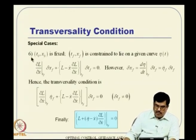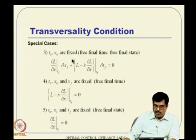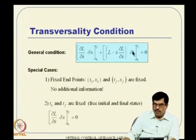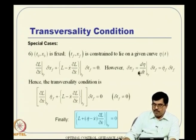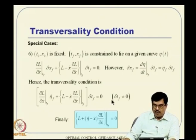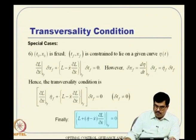A very special case is when t-naught and x-naught are fixed, and tf and xf are constrained to lie on a given curve. In this case, t-naught and x-naught give no extra information, but tf and xf—delta xf and delta tf—cannot be taken as zero. However, they satisfy a constraint equation derived from the fact that xf is a function of eta and tf. So delta xf equals eta-dot times delta tf, which can be substituted in. Since delta tf is not zero, the coefficient must be zero, giving an additional equation needed for this type of problem.